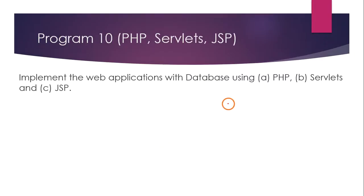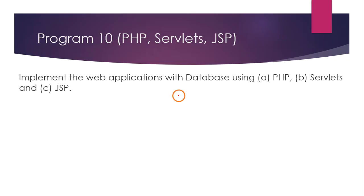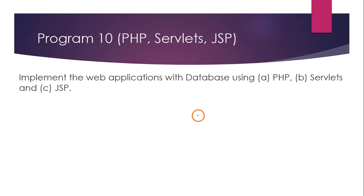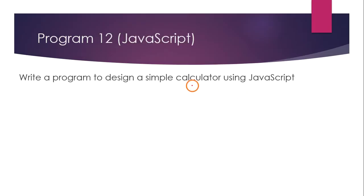Program ten uses PHP with a database — Oracle or MySQL — to retrieve data and display it on a web page. Program eleven does the same but uses XML instead of a database — that is the only difference between programs ten and eleven. The last program, twelve, is to create a simple calculator using JavaScript. These are all twelve programs in the lab curriculum.